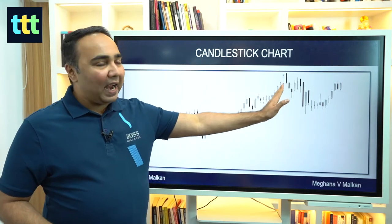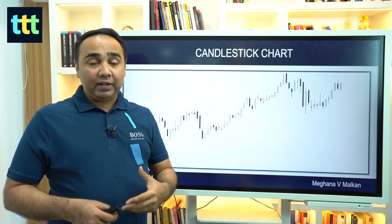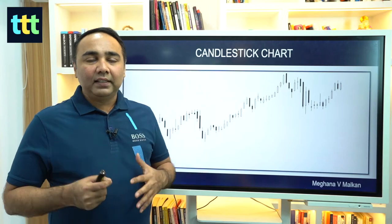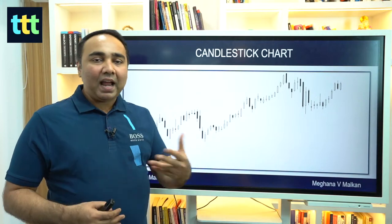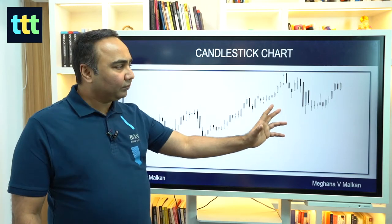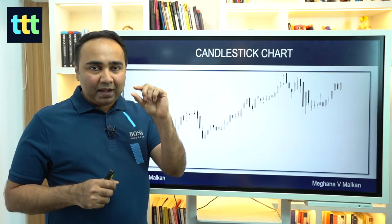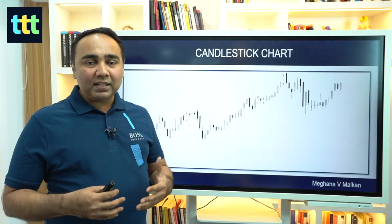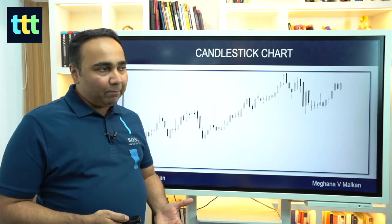Every candle stands for that particular time period. On a daily chart, every candle is one day. On a weekly chart, every candle is one week — Monday to Friday. On a monthly chart, every candle covers the full month. For intraday — 5 minute, 15 minute — the candlestick pattern remains the same. You'll see different sizes: big bodies, big shadows, small shadows, sometimes very small or invisible bodies. We'll understand what all this means through some basic candlestick patterns, and maybe cover advanced patterns in another episode.